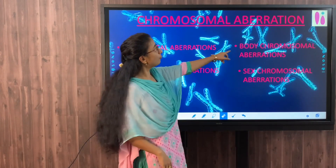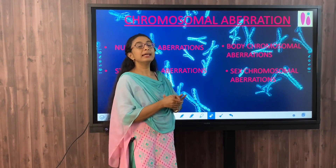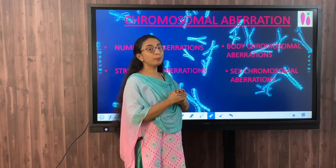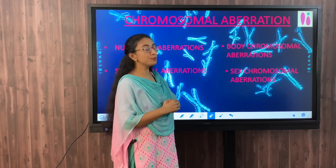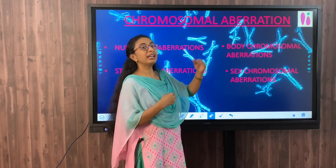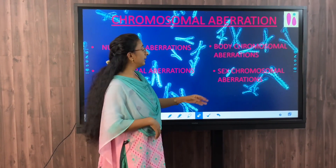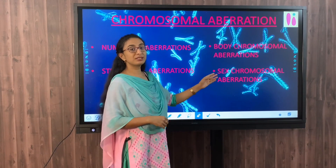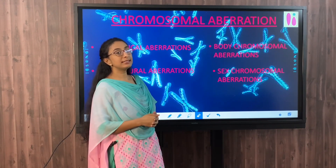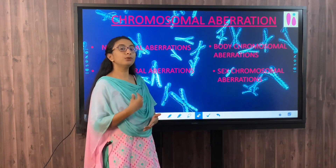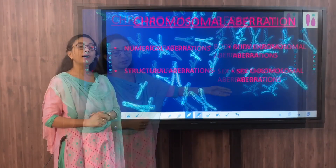Body chromosomal aberrations involve changes to the autosomes - the 22 pairs or 44 chromosomes. If there is a change in those chromosomes, we call it a body chromosomal aberration. Sex chromosomal aberrations involve changes to the sex chromosomes - X and Y in males, and X and X in females. If there is a change in those chromosomes, it is called a sex chromosomal aberration.